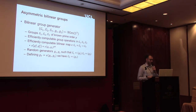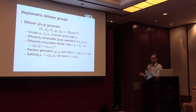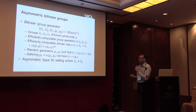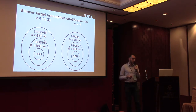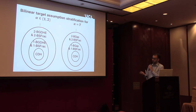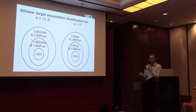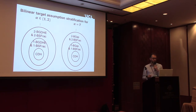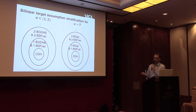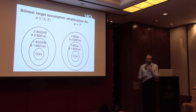In the asymmetric bilinear group setting, we have a bilinear group generator producing three different groups and a bilinear map from the two source groups into the target group. The same pattern emerges: we get two uber assumptions. In the source groups, we have a variant of the GTHE assumption and a variant of the simple fractional assumption that again gives a hierarchy implying all non-interactive computational assumptions in the source groups. In the target group, the GTHE must be replaced by a bilinear gap assumption, which is somewhat more complicated.